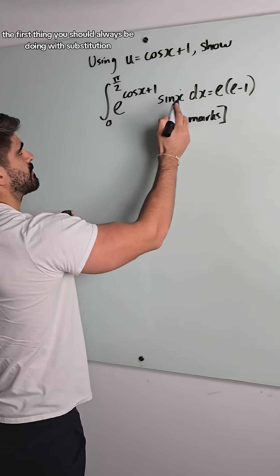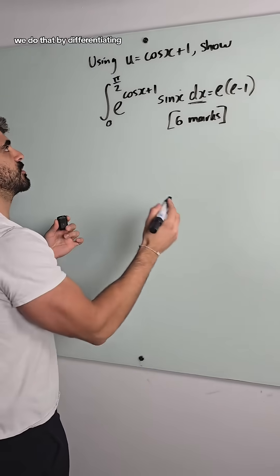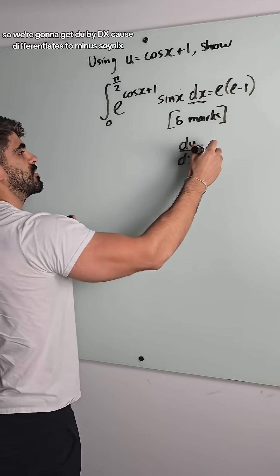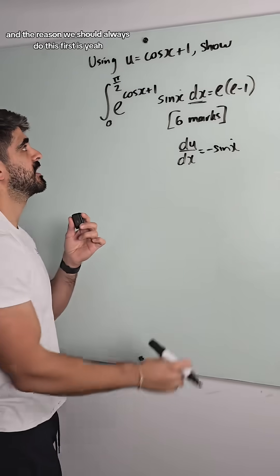So the first thing you should always be doing with substitution is changing the dx into du, and we do that by differentiating. So we're going to get du by dx. Cos differentiates to minus sin x.